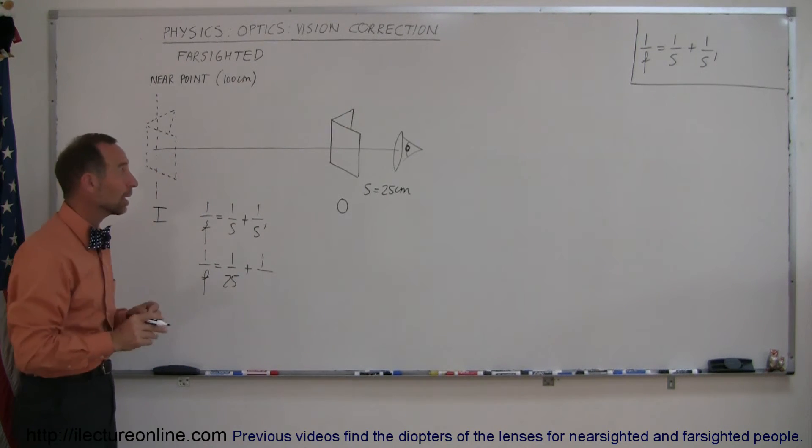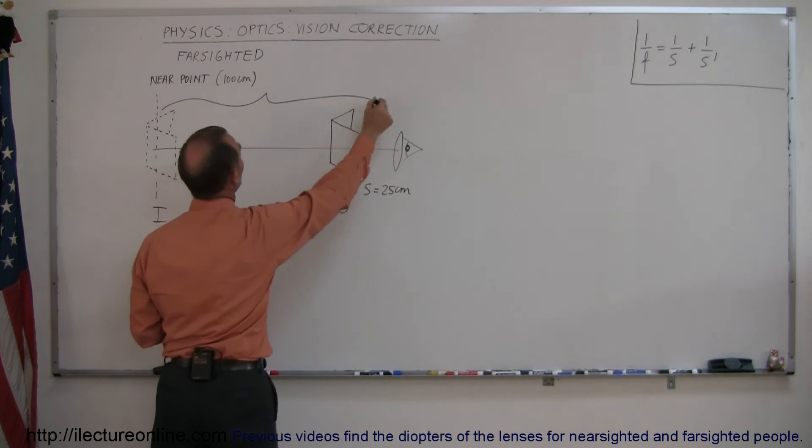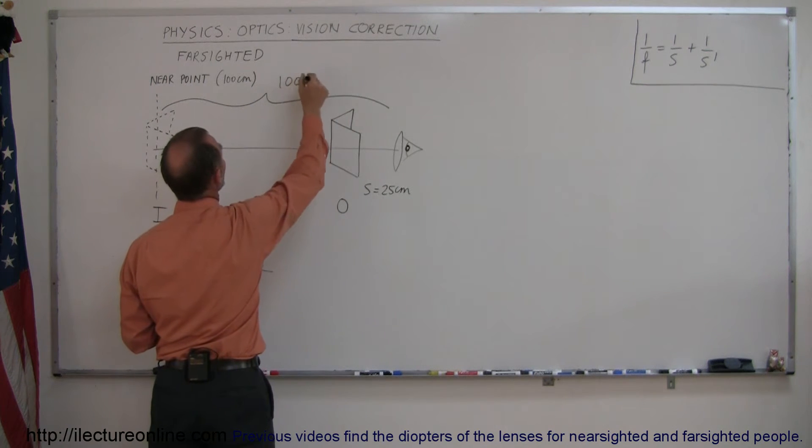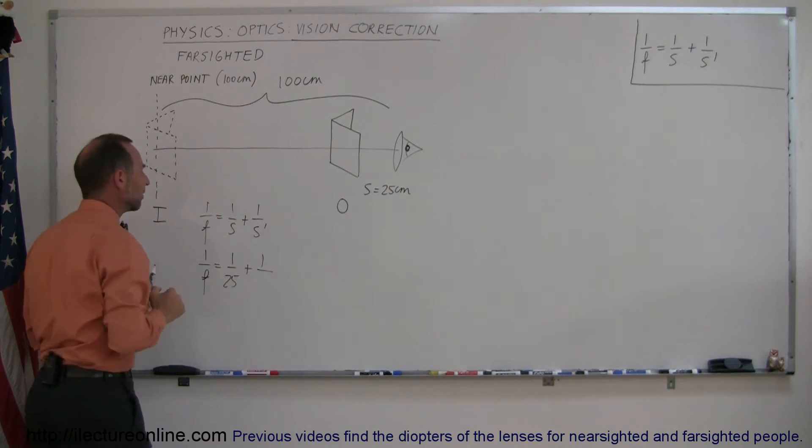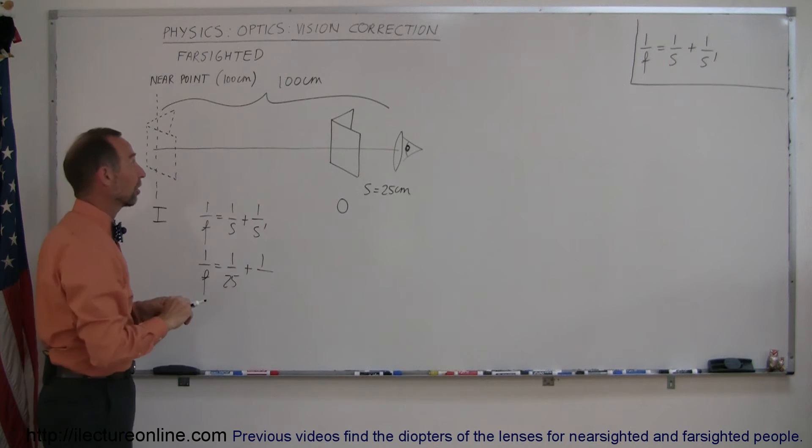Now, s prime is the distance to the image. Of course, that distance would have to be 100 centimeters. And remember that the image needs to be in front of the lens, which means the image distance is a negative 100 centimeters, so minus 100.